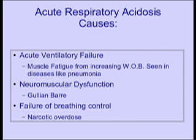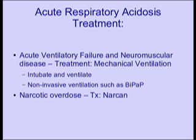This slide shows treatments for acute respiratory acidosis. For acute ventilatory failure and neuromuscular diseases, the treatment is going to be mechanical ventilation, which means you either intubate and ventilate the patient, or non-invasive ventilation, which has been used with some success in these patients. For narcotic overdose, Narcan is an antagonist. Other drugs causing respiratory acidosis will require mechanical ventilation.